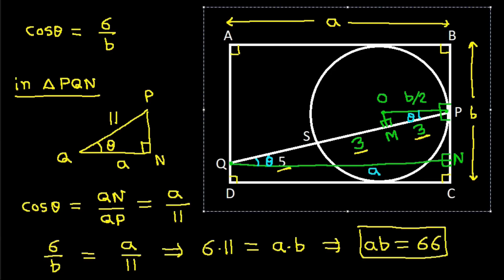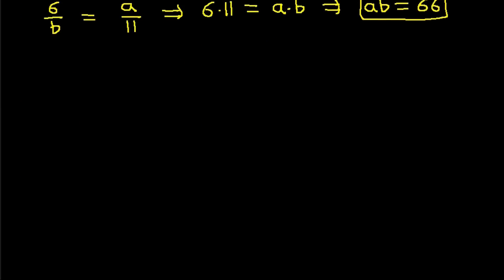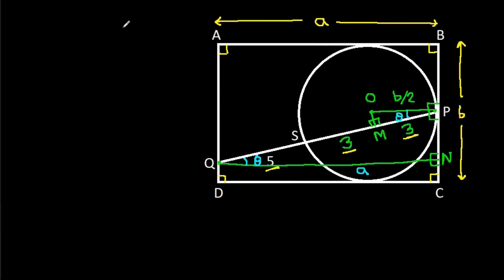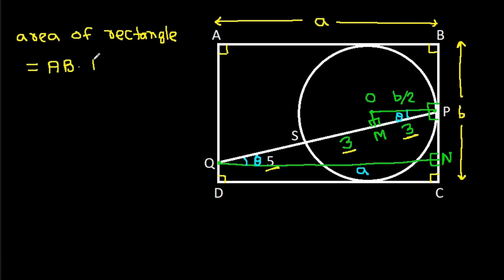So the area of rectangle ABCD equals A times B, which is 66.